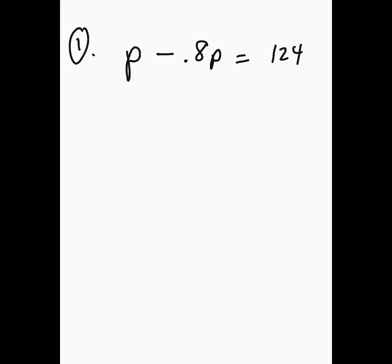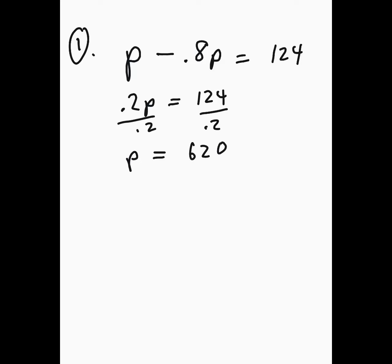So 1p minus 0.8p is 0.2p, and now we have to divide by 0.2. If you divide 124 by 0.2, you get 620. Let me double-check that with the calculator: 124 divided by 0.2 equals 620. So the original price is $620.